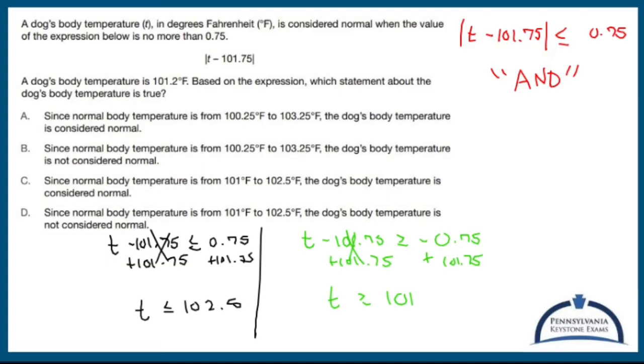So this is an and statement. So if I'm going to say T is less than that number and also greater than that number, then I'm going to put T right in the middle of everything. I'm going to put less than or equal tos, and I'm going to make it an in-between where 101 is on the left and 102.5 is on the right.